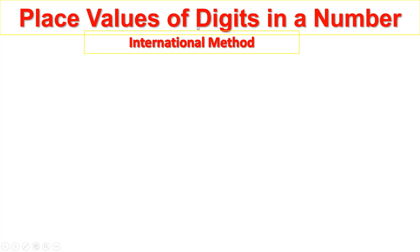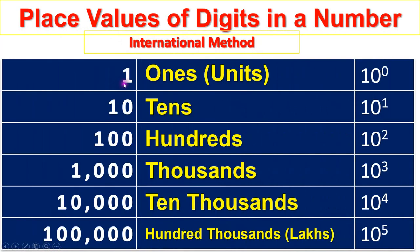Place values of digits in a number — International method. Ones are units: 10 to the power of 0.